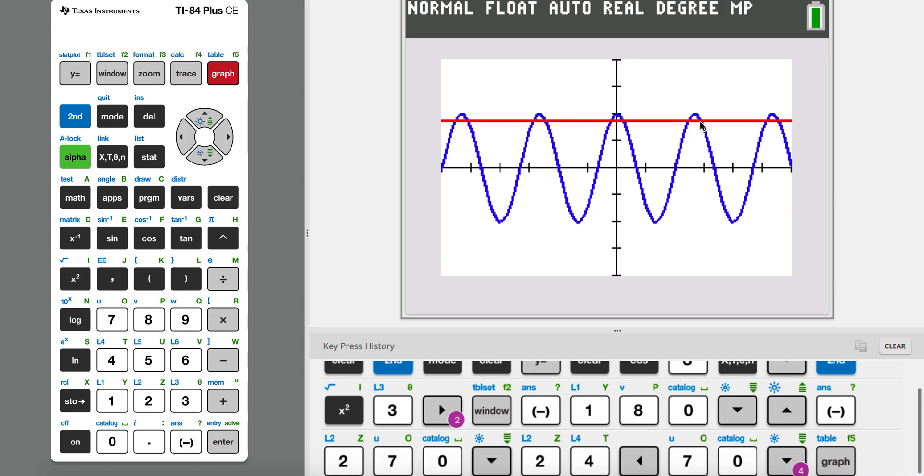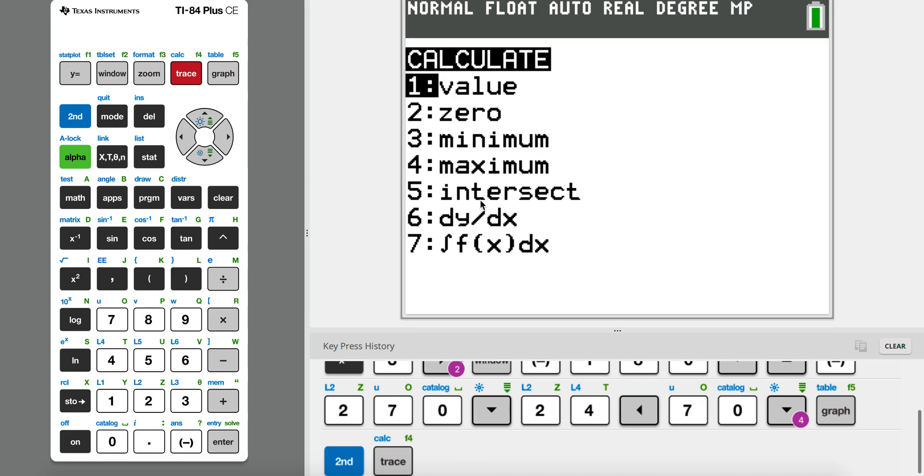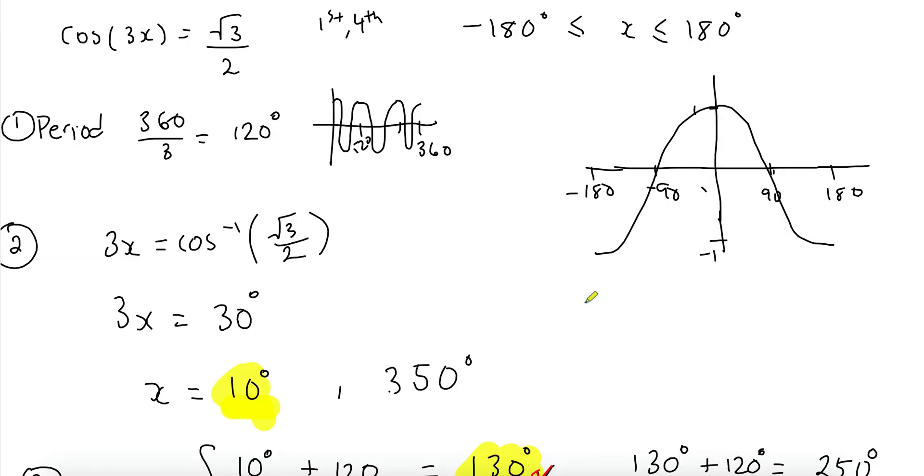110, and 130. So these are our solutions and you can check them by going second, calculate, and then going to intersection. So that's another way of checking your answers to this.